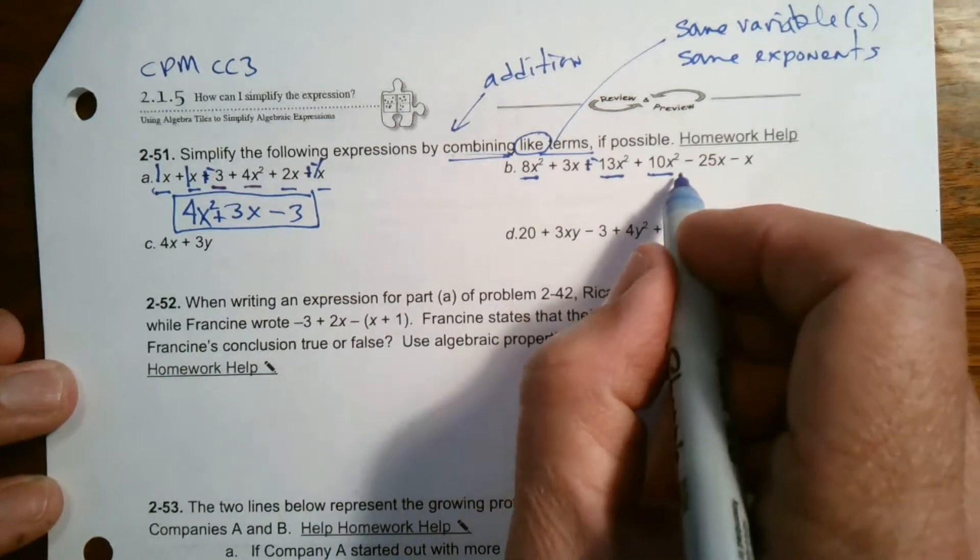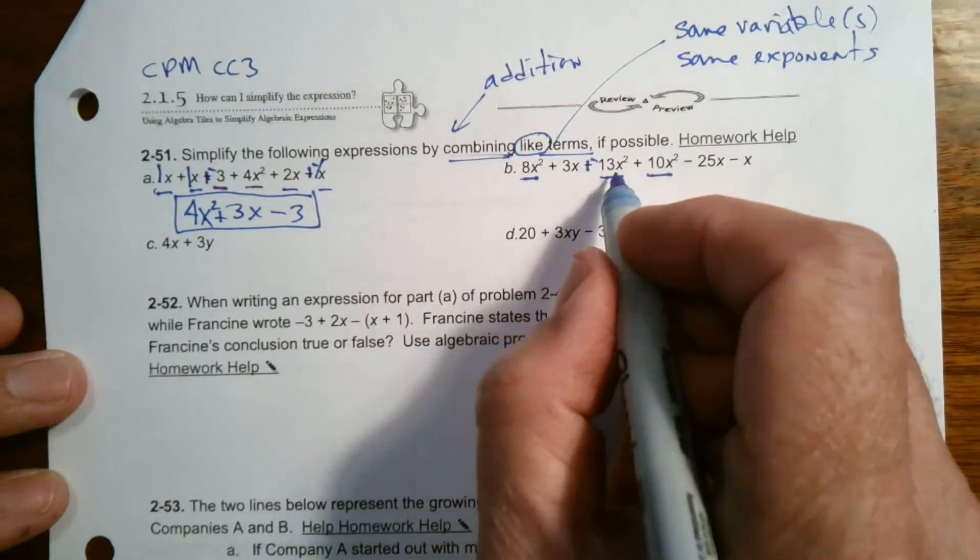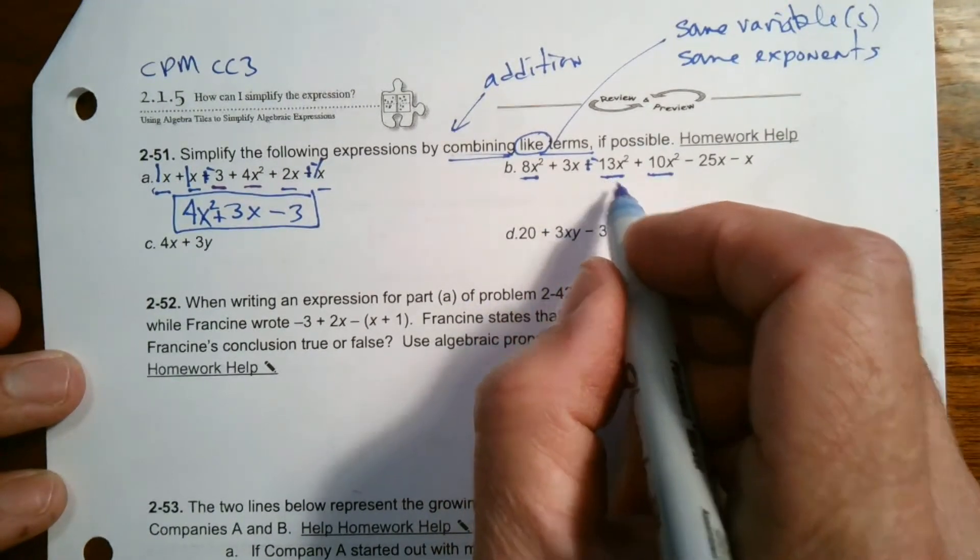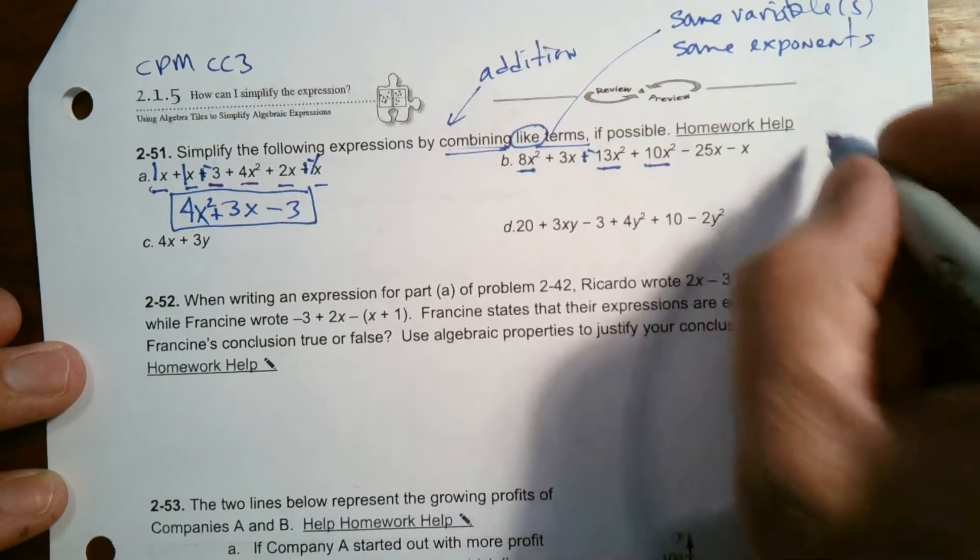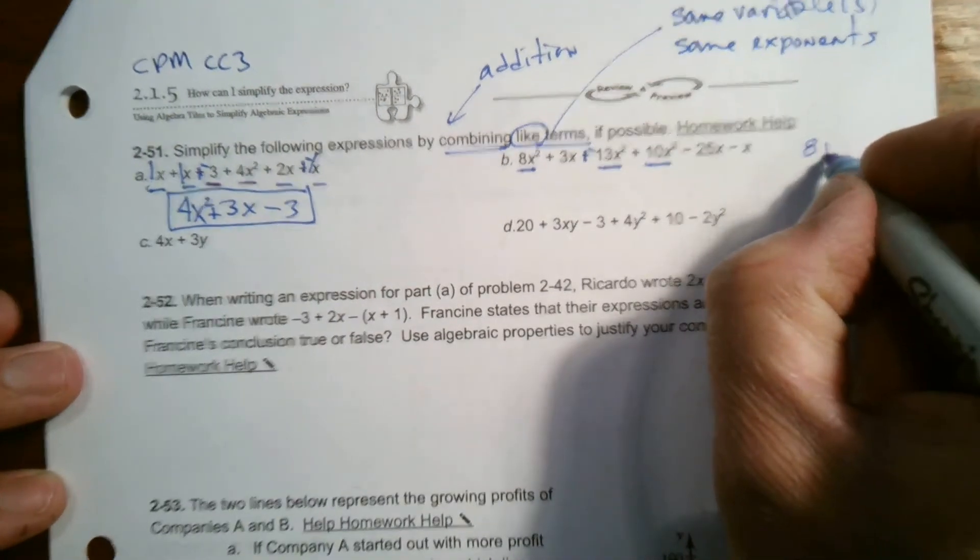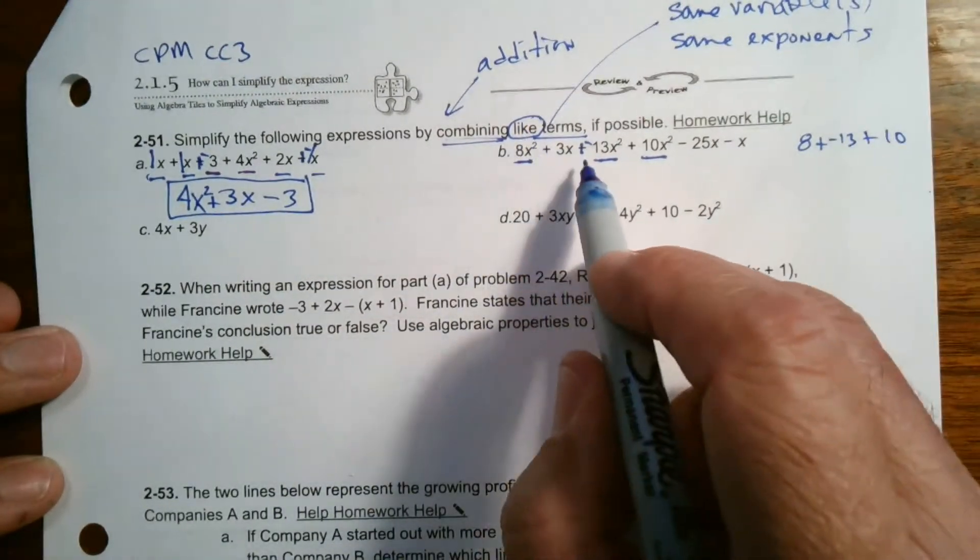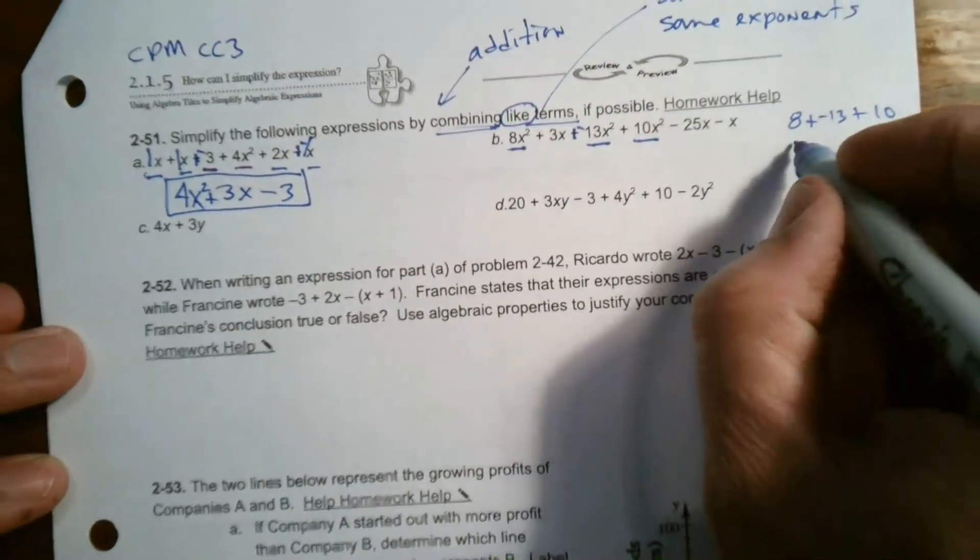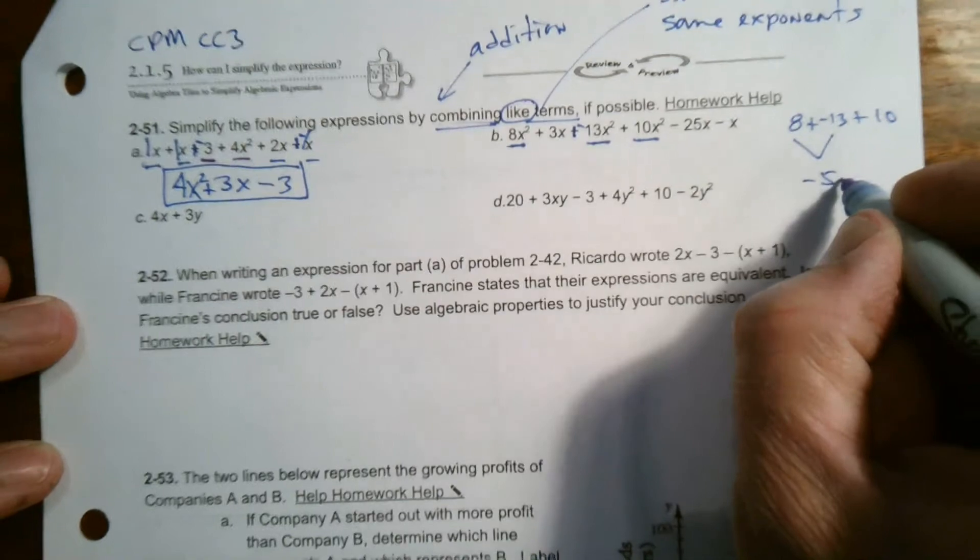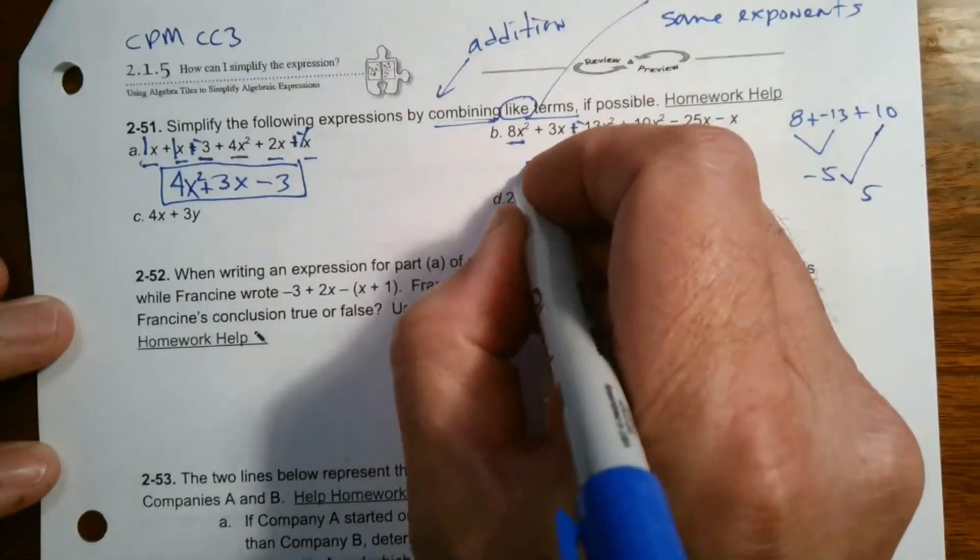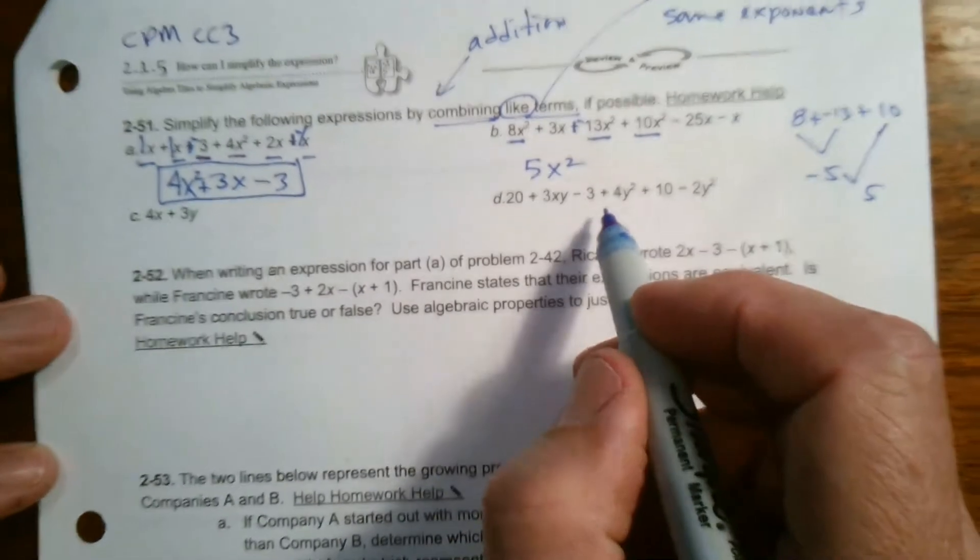So how many X squareds are there? There's eight and negative 13 together. That makes negative five, and then negative five and 10 make positive five. So eight, look at it this way, eight plus negative 13 plus 10. That's what I'm doing. I'm adding the coefficients of those X squared terms, and eight and negative 13 is negative five, then negative five and 10 makes five. So that's why I ended up with a five X squared as the number of X squareds I have.